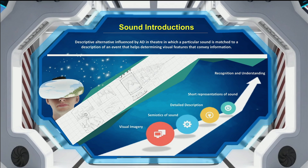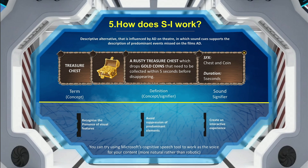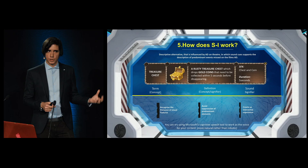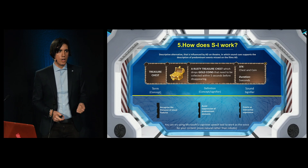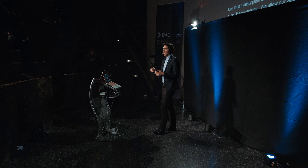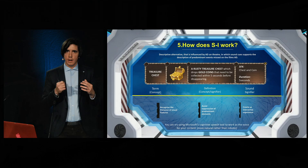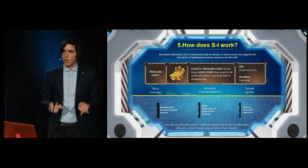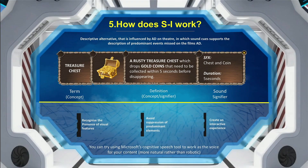The way that it works is the following: we provide our audiences with a sub-menu within our experience, in which we will have a term, then a description, and then a sound effect that will be played before and during the experience. By doing that, we allow our audiences to recognize the presence of visual features by the implementation of sound effects, we avoid the suppression of predominant elements that are important to understand our experience, and we create an interactive experience for our audiences.